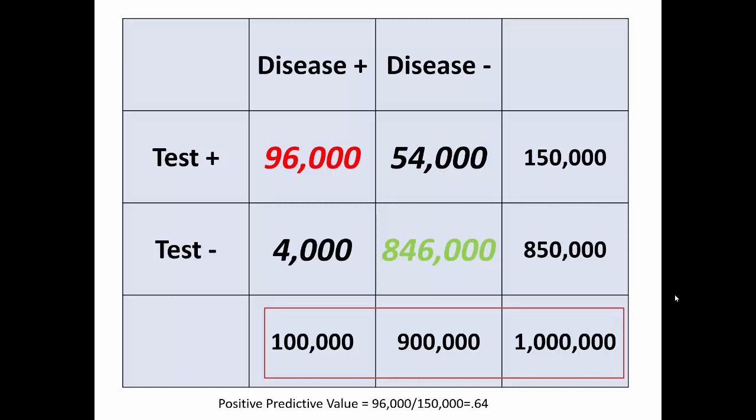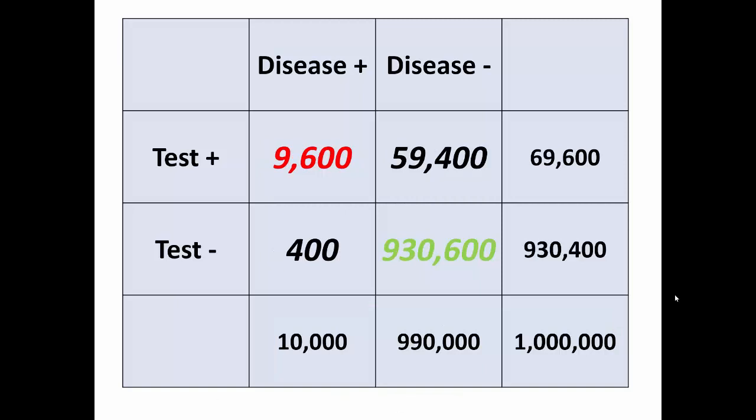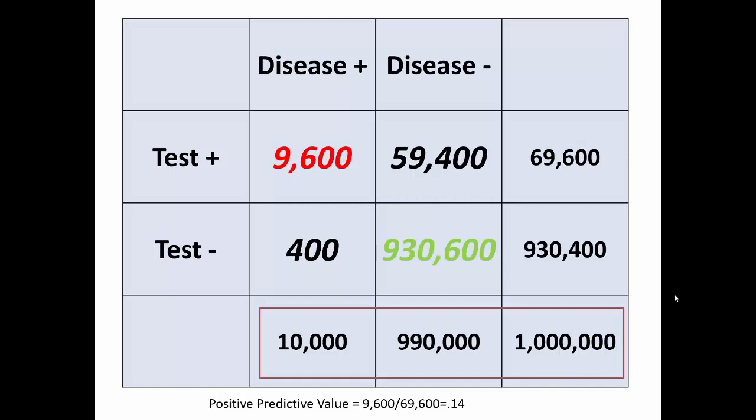Now, what happens when the prevalence rate drops from 1 in 10 to 1 in 100, or 1%? Look at the upper right-hand corner now — there are far more false positives than true positives. Sensitivity and specificity are still quite high; it's just that the ratio between the two columns has now shifted so dramatically that we have a lot more false positives. Only 14% of positive results are true positives, so the vast majority of positive results are going to be false positives.